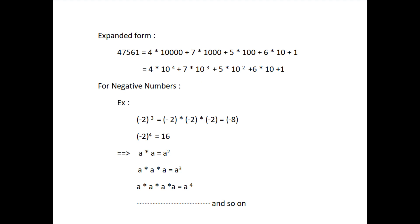See the number 47,561. We know an expanded form of this number is 4 into 10,000 plus 7 into 1000 plus 5 into 100 plus 6 into 10 plus 1. This can be written as 4 into 10 to the power 4 plus 7 into 10 to the power 3 plus 5 into 10 to the power 2 plus 6 into 10 plus 1.